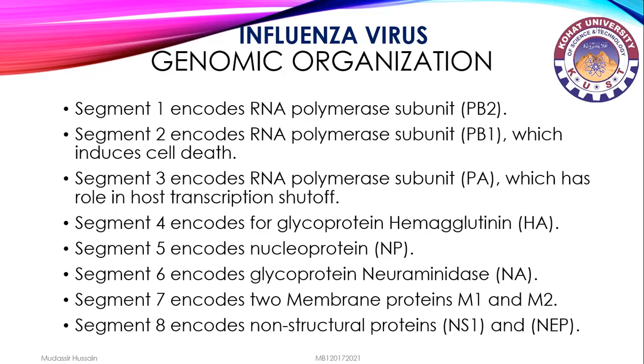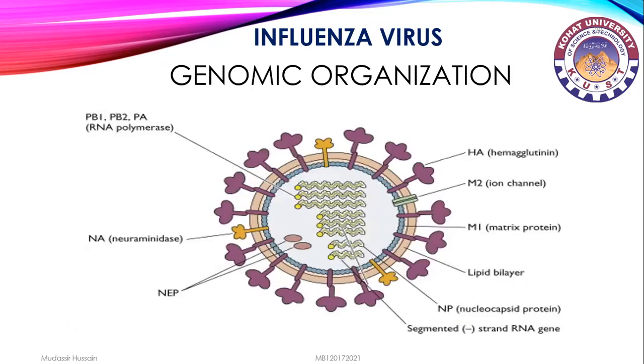Segment 7 encodes two membrane proteins M1 and M2, which give additional support to the envelope. Segment 8 encodes non-structural proteins NS1 and NEP. This is the diagram of genomic organization.